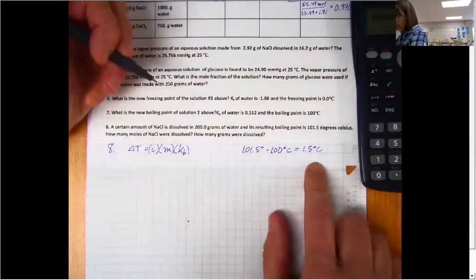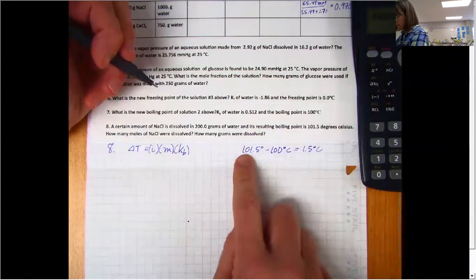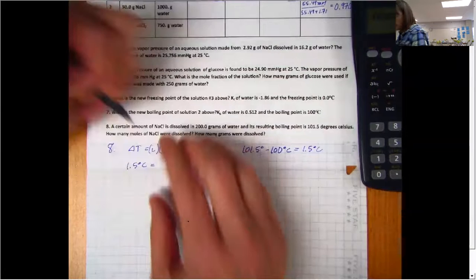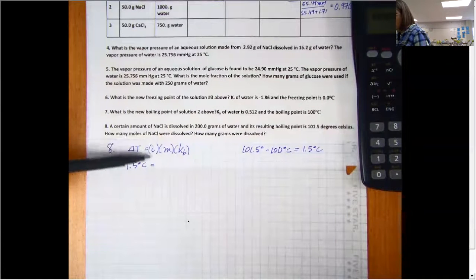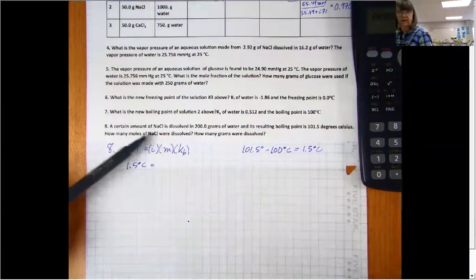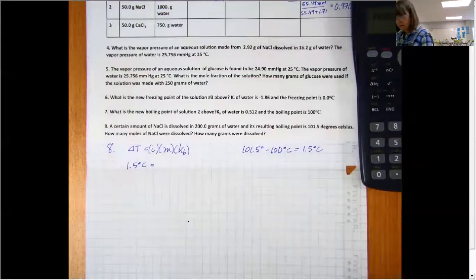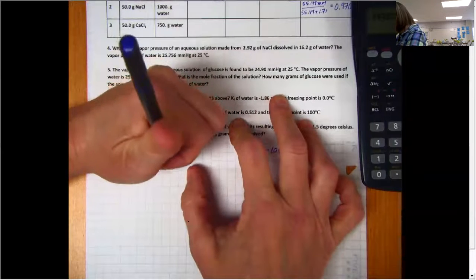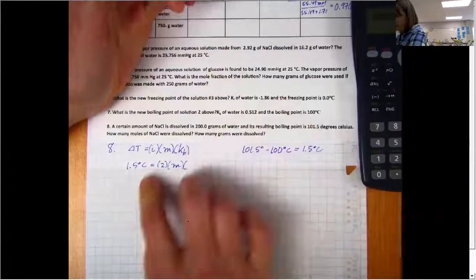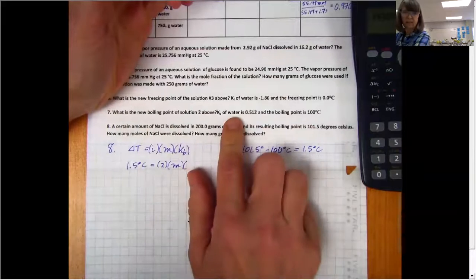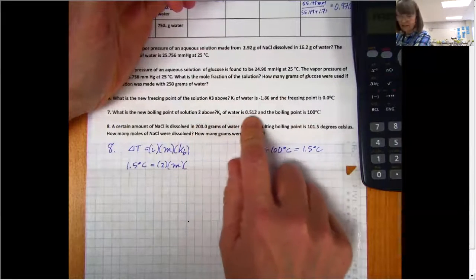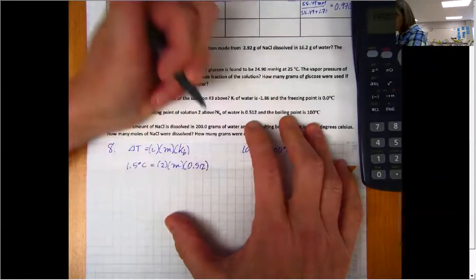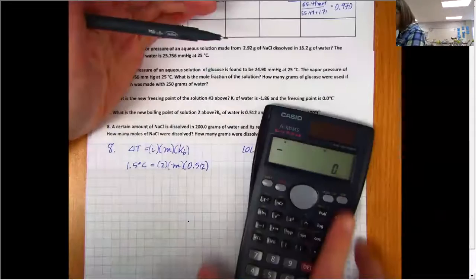So 1.5 degrees Celsius is going to be equal to our Van't Hoff number. Well, NaCl is going to dissolve into Na plus and Cl minus. So our little i is going to be 2. Our molality is what we're solving for. And our Kb is just a constant, which they gave us in the prior problem. The boiling point constant of water is 0.512. So do the magic of simplification, and we find out that our molality is 1.46.